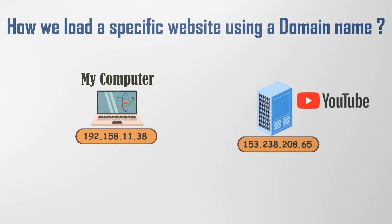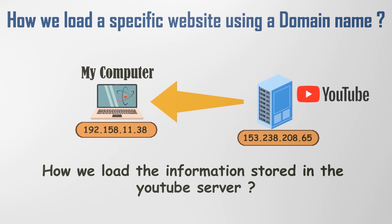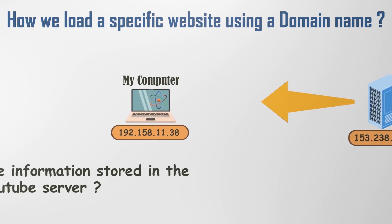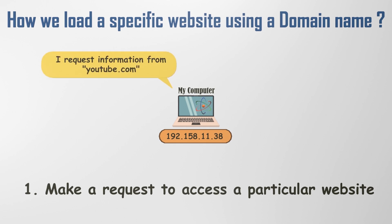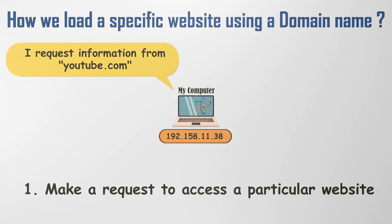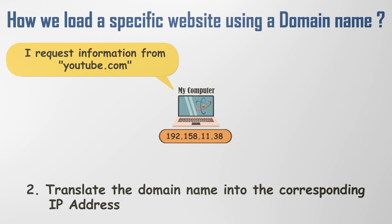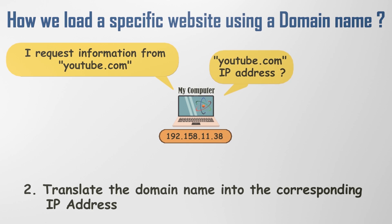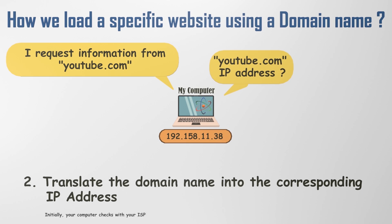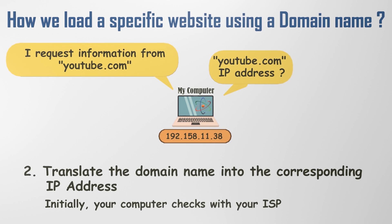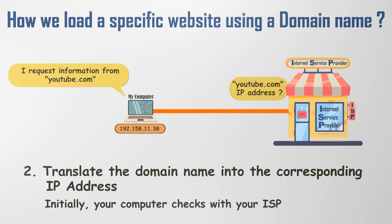Let's consider an example of how we load the information stored in the YouTube server using the domain name. We make a request to access a particular server, usually by clicking on a link on a web page or typing out a domain. The first step in accessing a website is translating the domain into the corresponding IP address. Initially, your computer checks with your ISP, which keeps a list of frequently requested websites. If someone has recently requested the same website, the ISP can promptly provide the IP address.